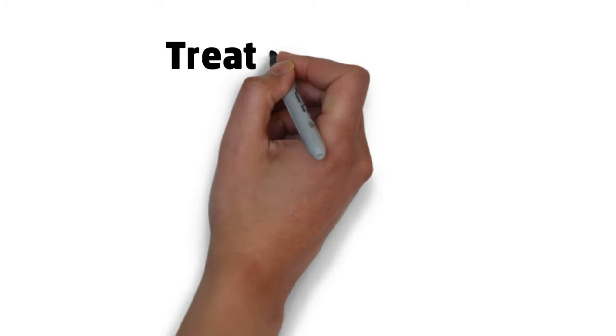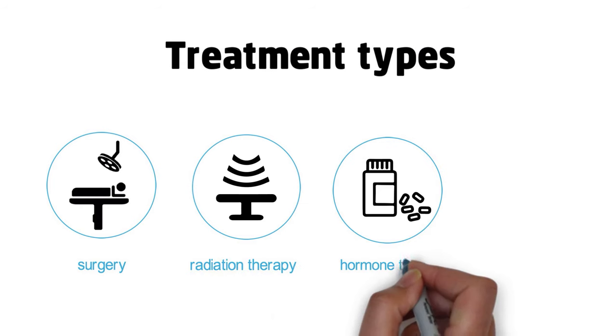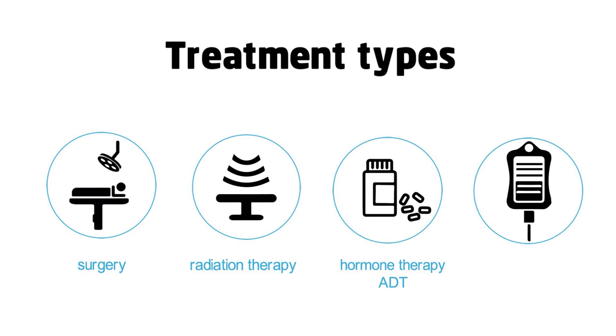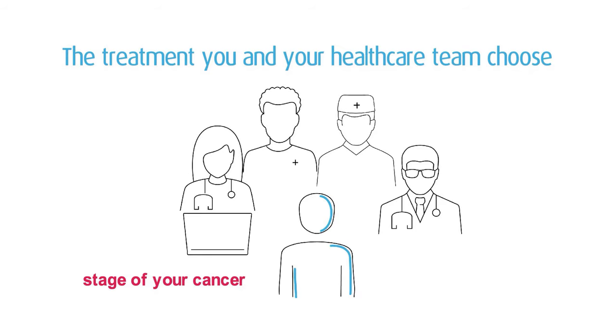Other types of prostate cancer treatment include surgery, radiation therapy, hormone therapy which is referred to as androgen deprivation therapy or ADT, and chemotherapy. The treatment you and your health care team choose will depend on the stage of your cancer and your overall health.